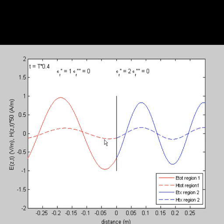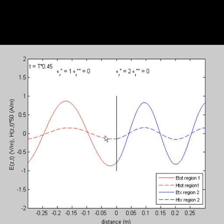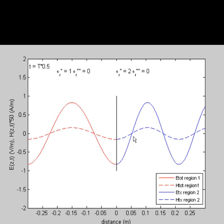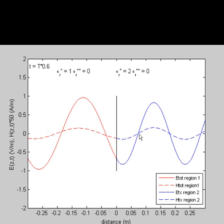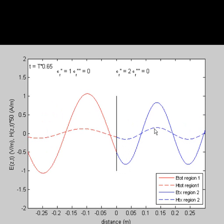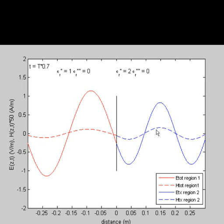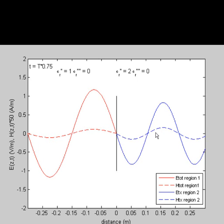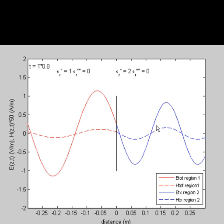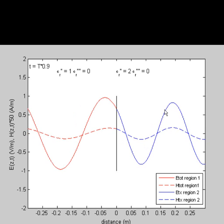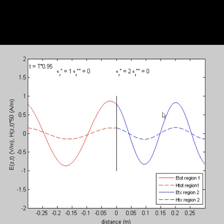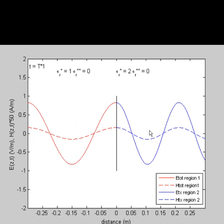We'll see that this isn't necessarily the case when dealing with lossy media. In region 2, you again have the electric field and the magnetic field in phase. Also, because it is a lossless medium in region 2, the amplitude as a function of distance does not decay. In the following examples, we'll see that is not the case.